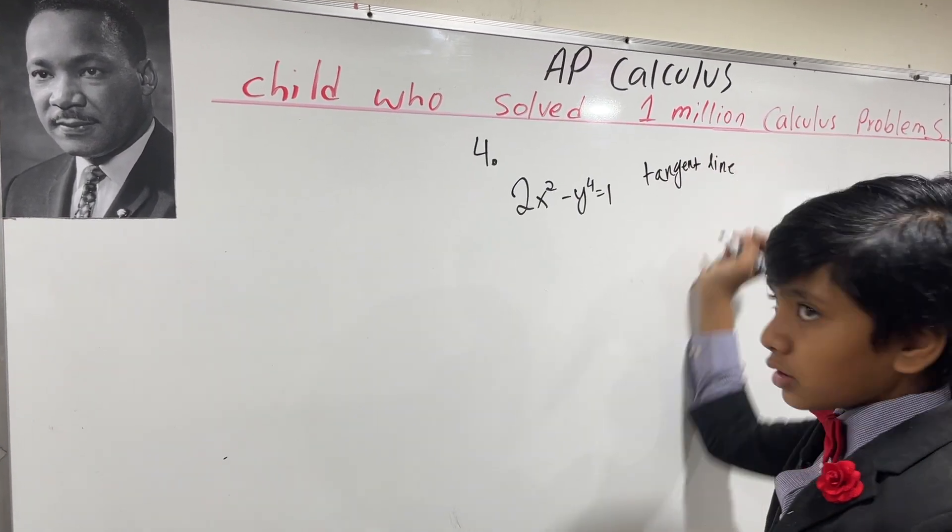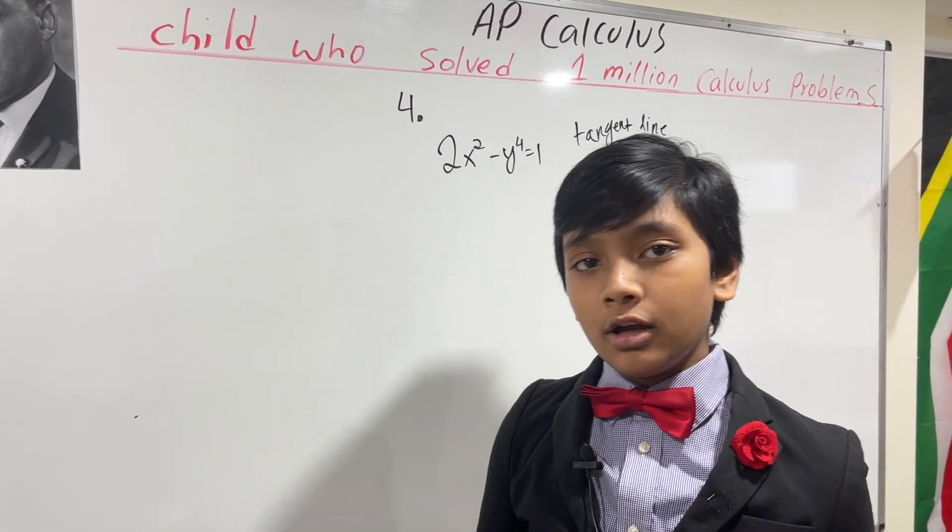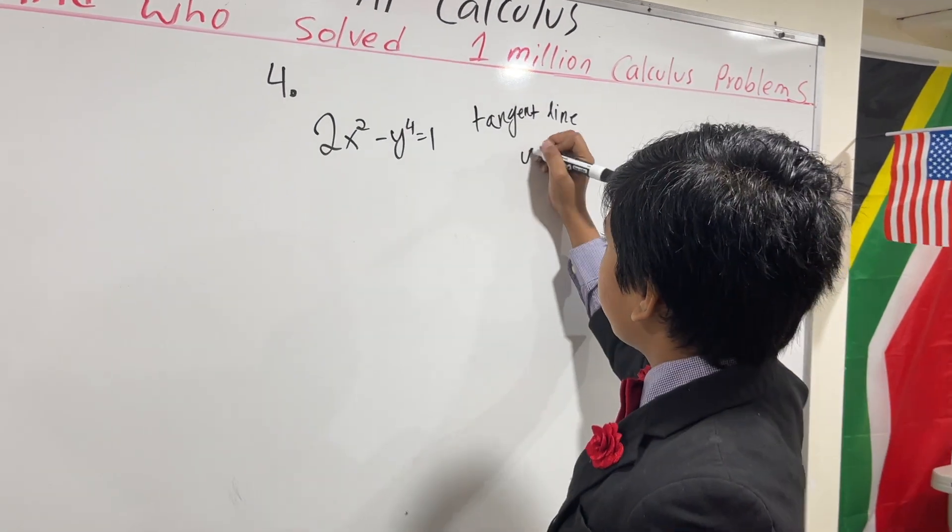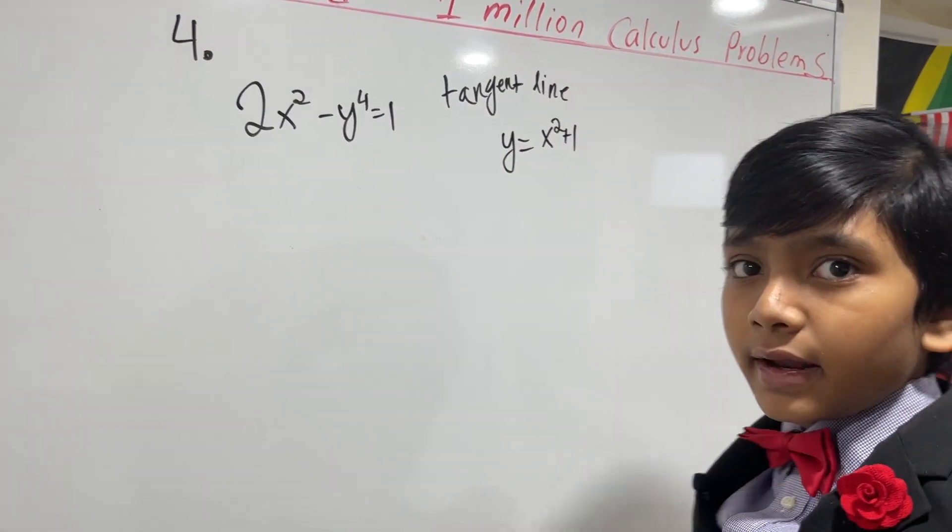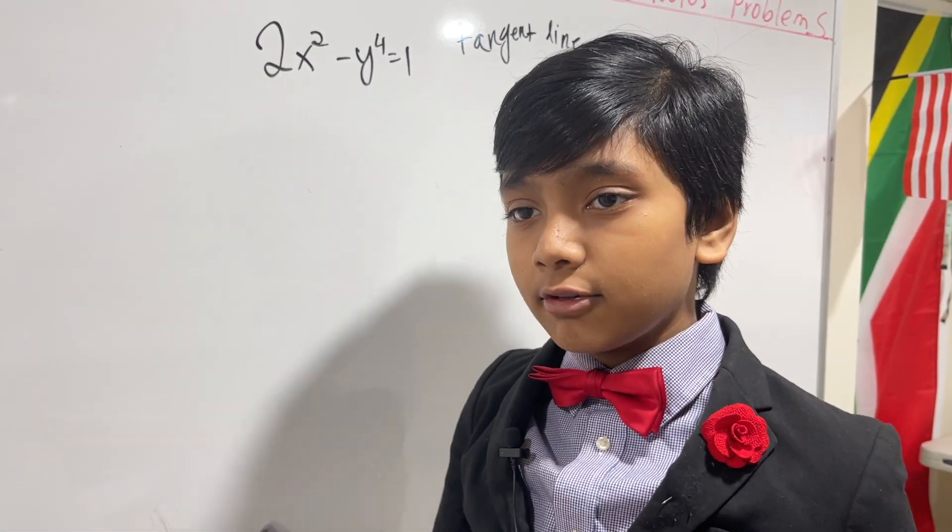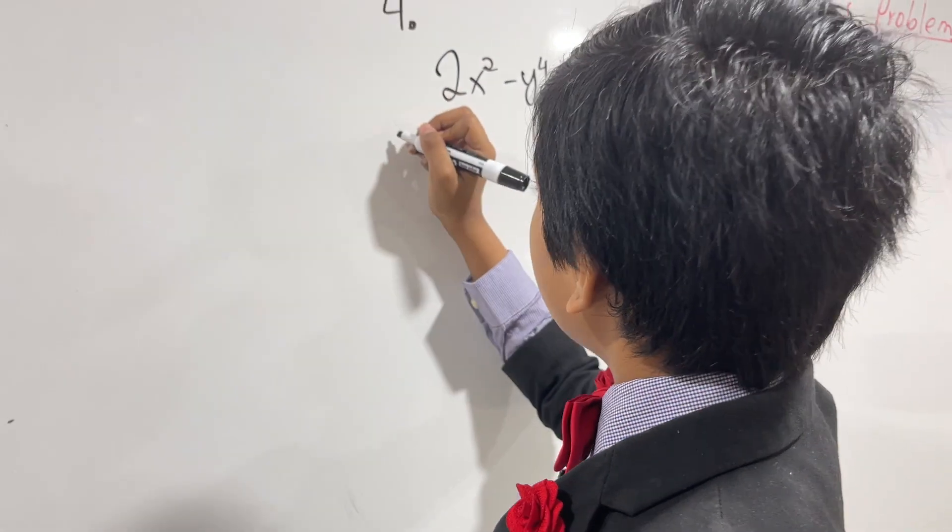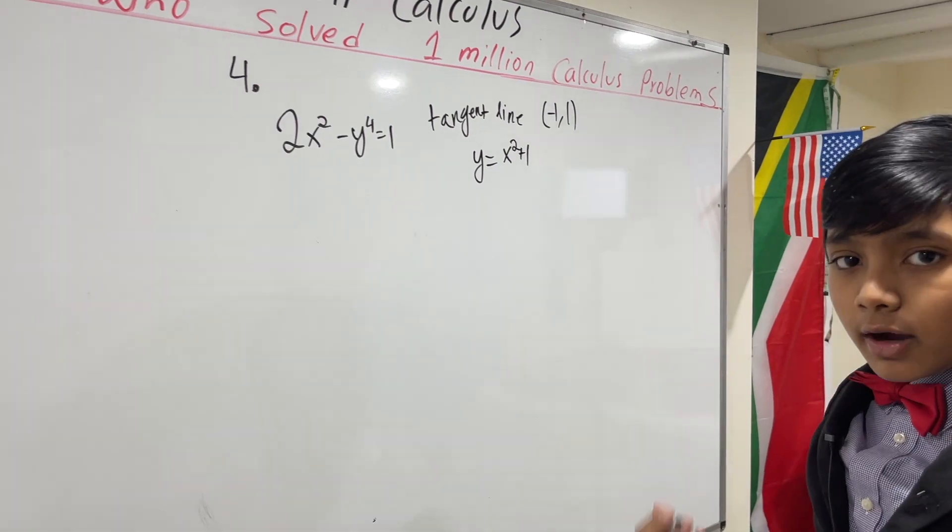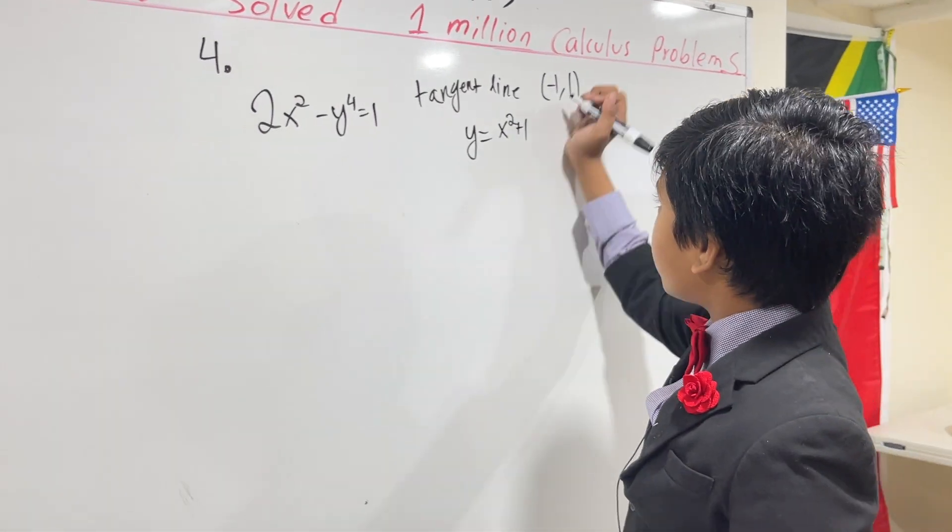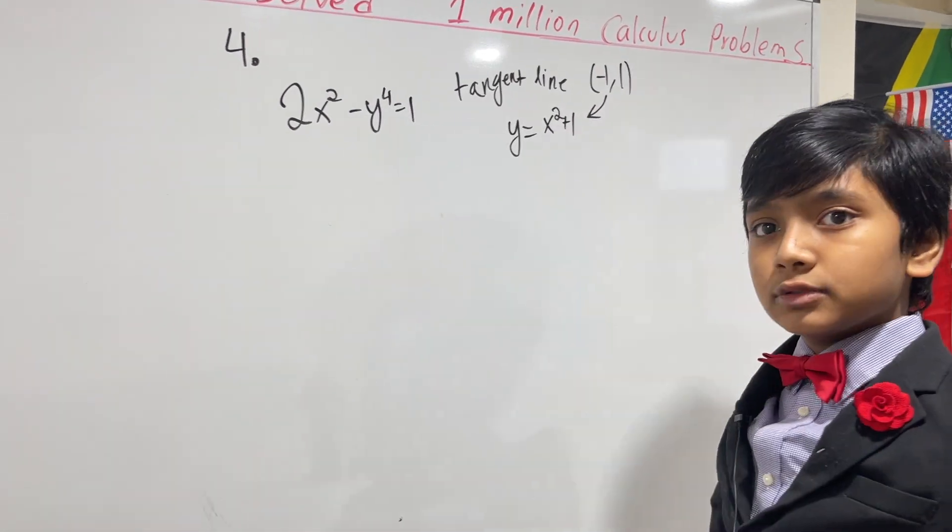Now, if you don't recall, let's try taking the tangent line with a more normal function, like, for example, y equals x squared plus 1. And I forgot to mention where the tangent line was. Sorry. So the tangent line at minus 1, comma 1. So let's try doing that for a simpler function, like x squared plus 1.